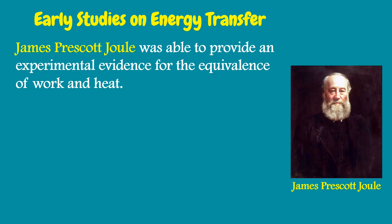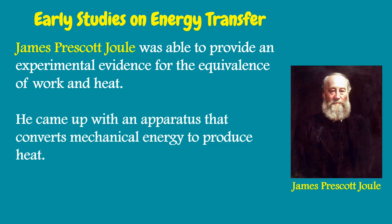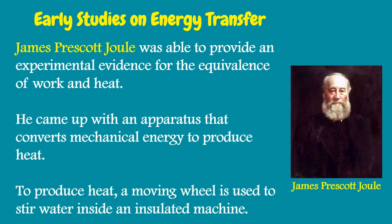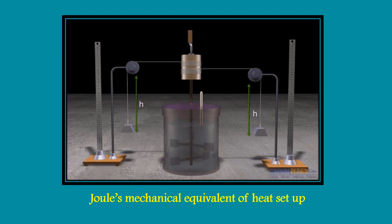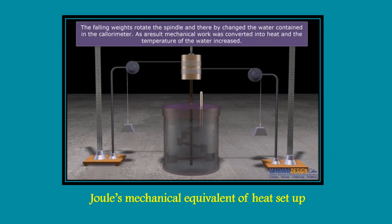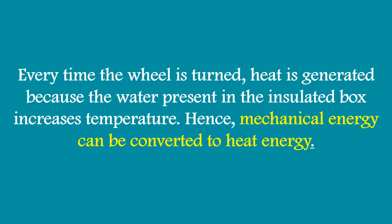James Prescott Joule was able to provide experimental evidence for the equivalence of work and heat. He came up with an apparatus that converts mechanical energy to produce heat. A moving wheel is used to stir water inside an insulated machine. This is the insulated machine created by Joule — every time the wheel is turned, heat is generated as the water inside increases in temperature. Hence, mechanical energy can be converted to heat energy.